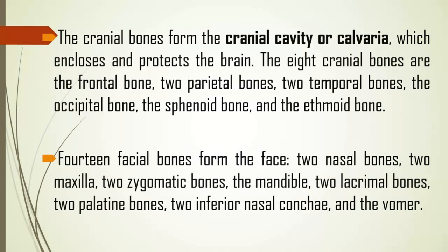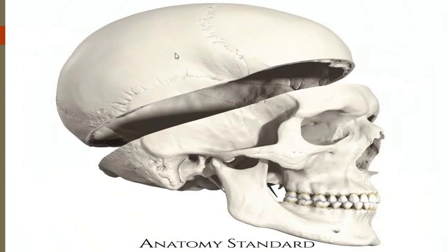The eight cranial bones are: the frontal bone, the two parietal bones, the two temporal bones, the occipital bone, the ethmoid bone, and the sphenoid bone. There are 14 facial bones that form the face, including the two nasal bones, the two maxillae, two zygomatic bones, the mandible, two lacrimal bones, two palatine bones, two inferior nasal conchae, and the vomer bone. The skull is separated into the upper calvaria, which encloses the brain, and the bones that make up the face.